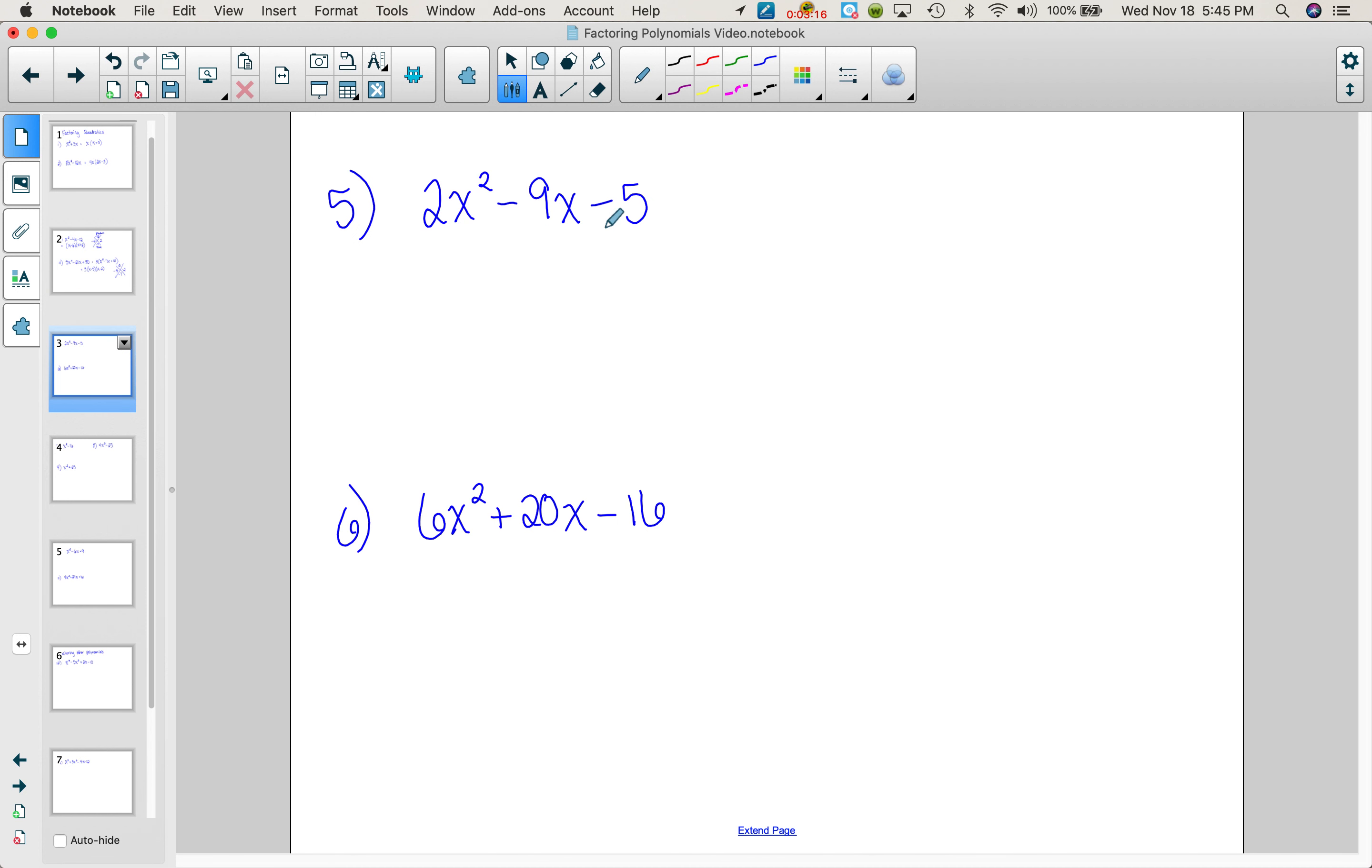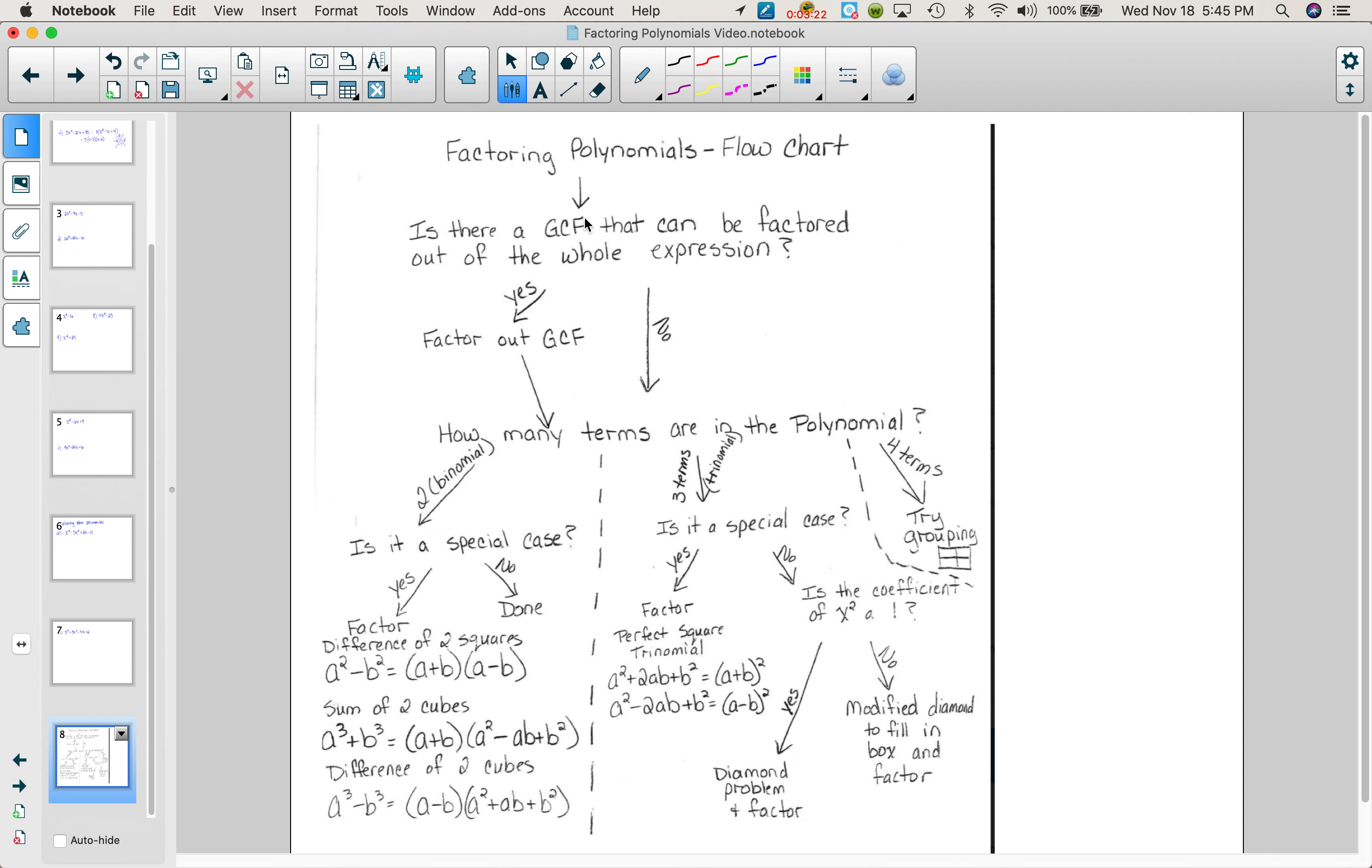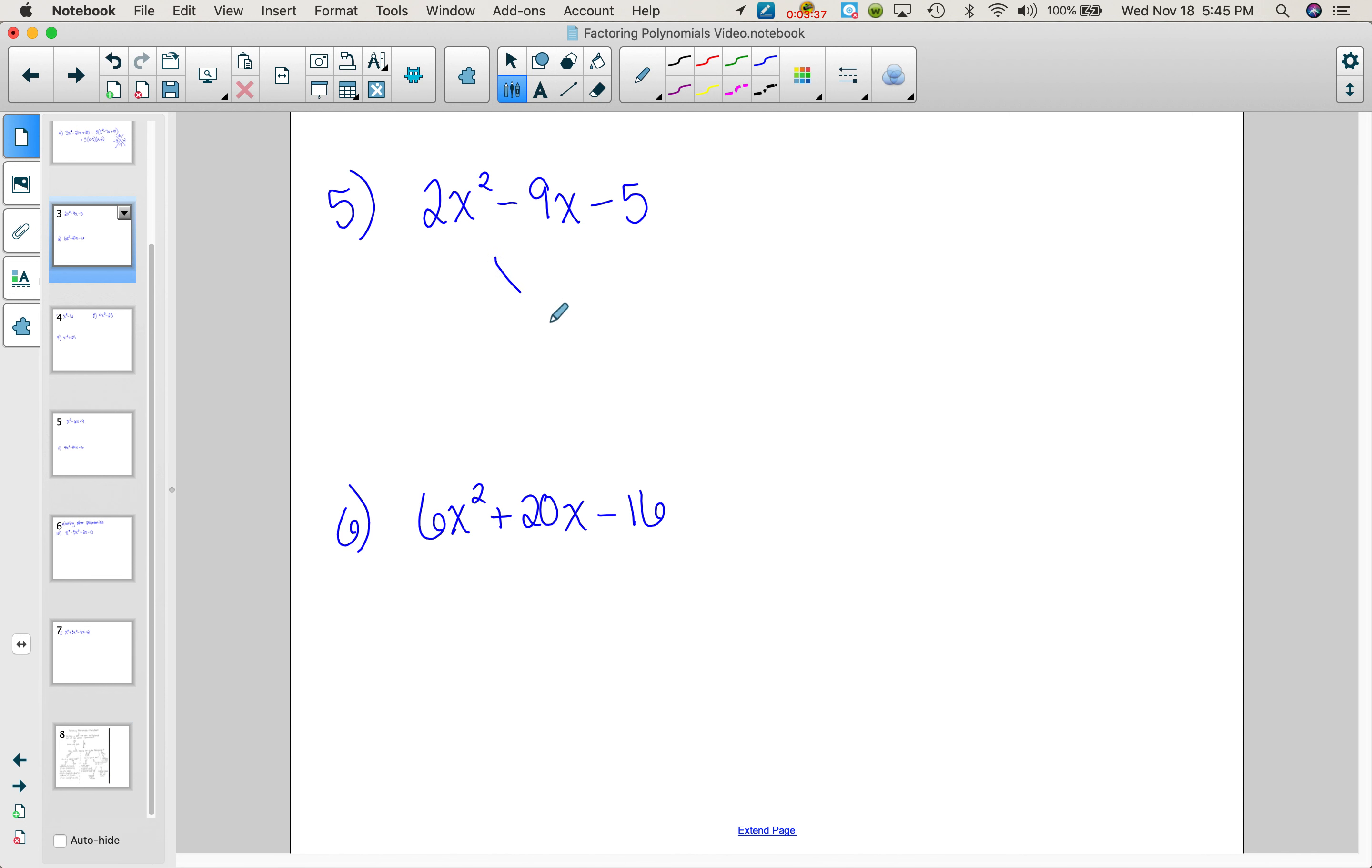Next problem. Is there a GCF? No. Okay. So then let's look at our factoring flowchart. How many terms are in the polynomial? 3. Is it a special case? No. Is the coefficient of x squared a 1? No. It was a 2. So do a modified diamond to fill in the box and factor. So remember our modified diamond, you're multiplying 2 times negative 5 and the sum is negative 9.